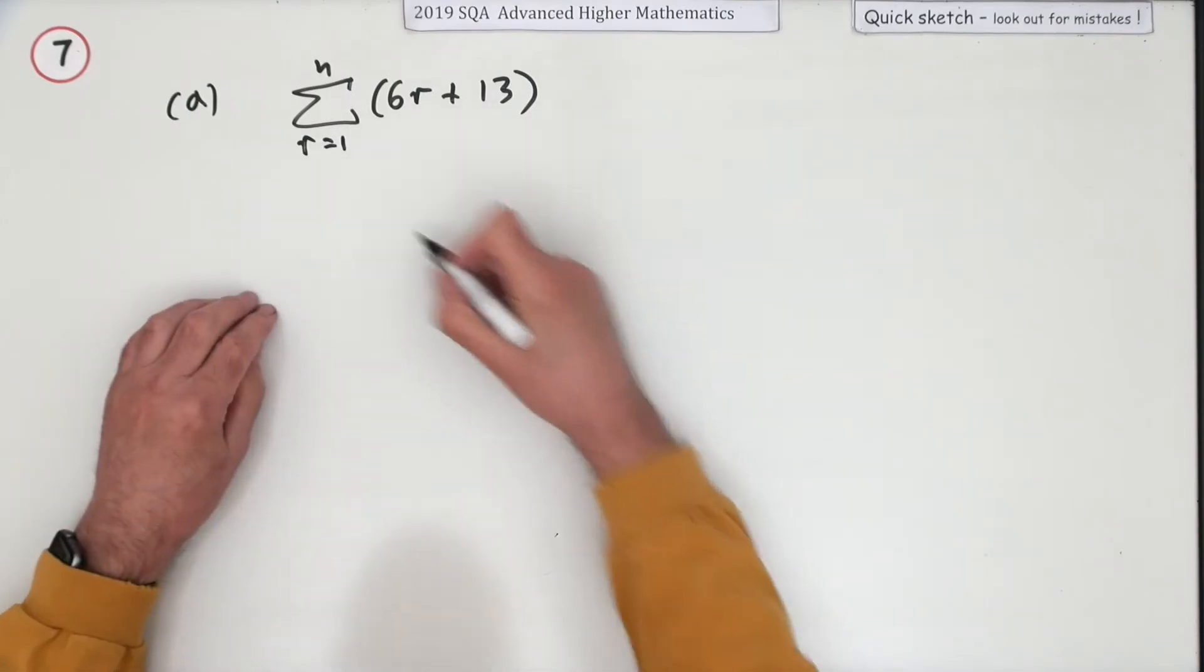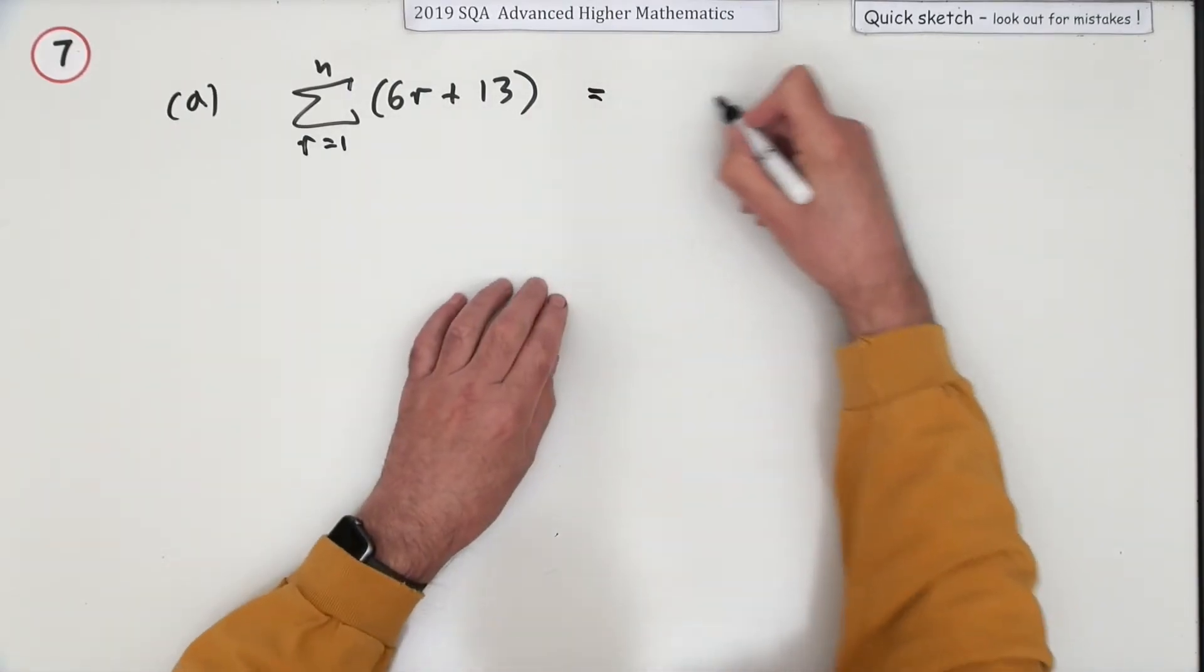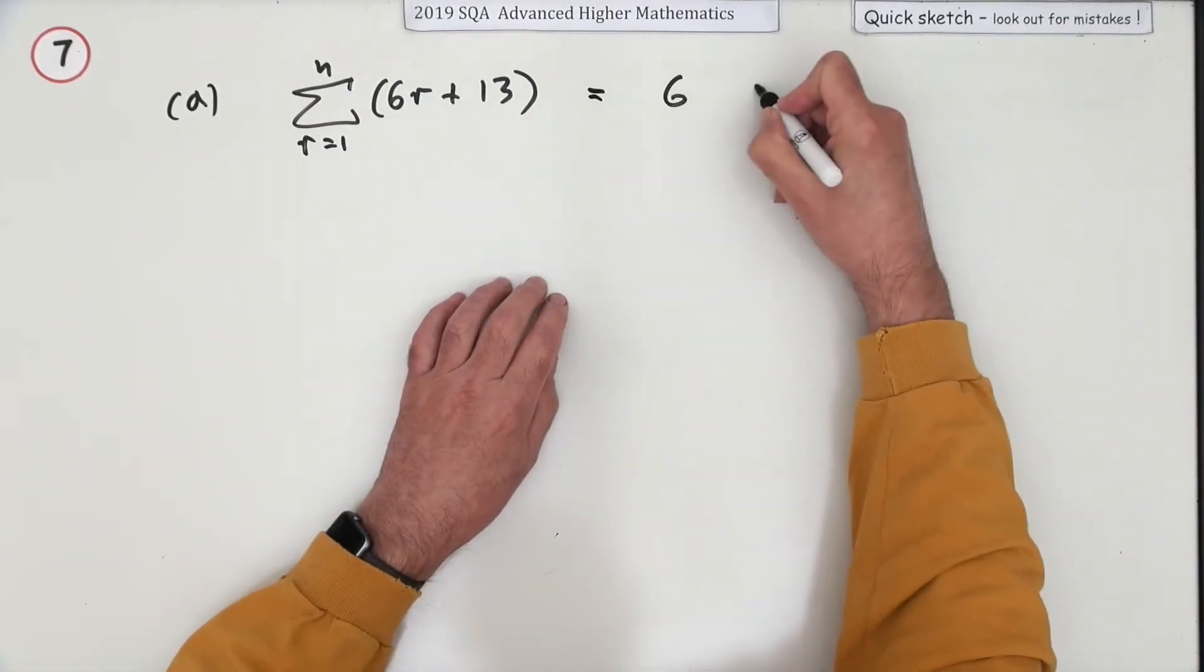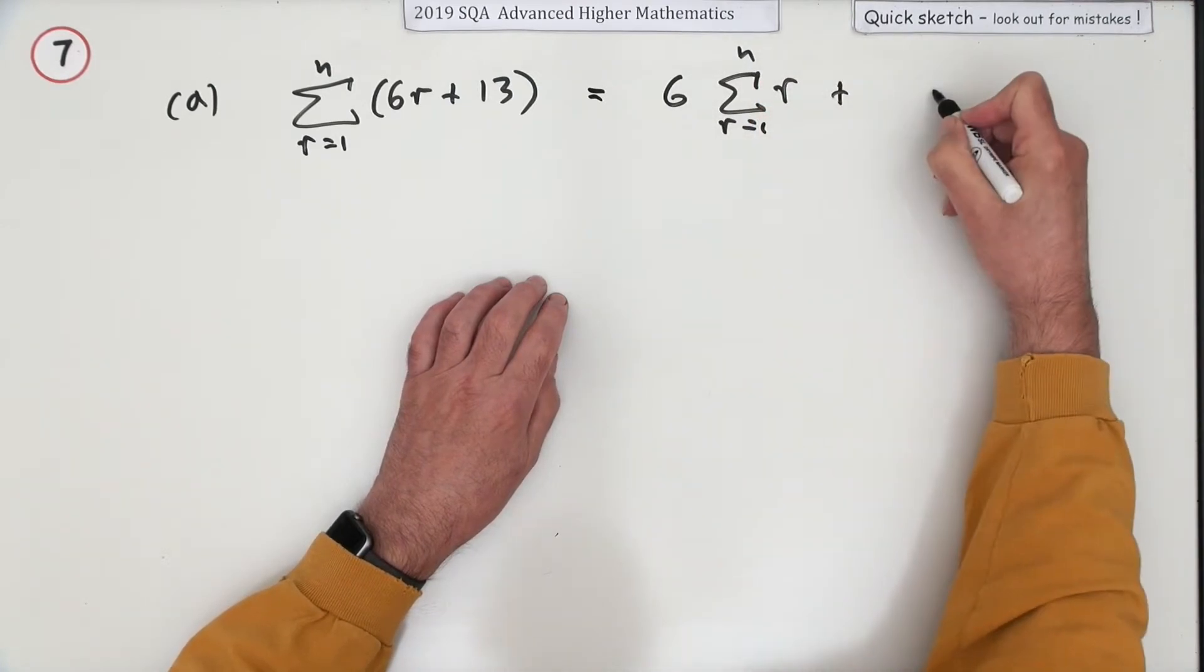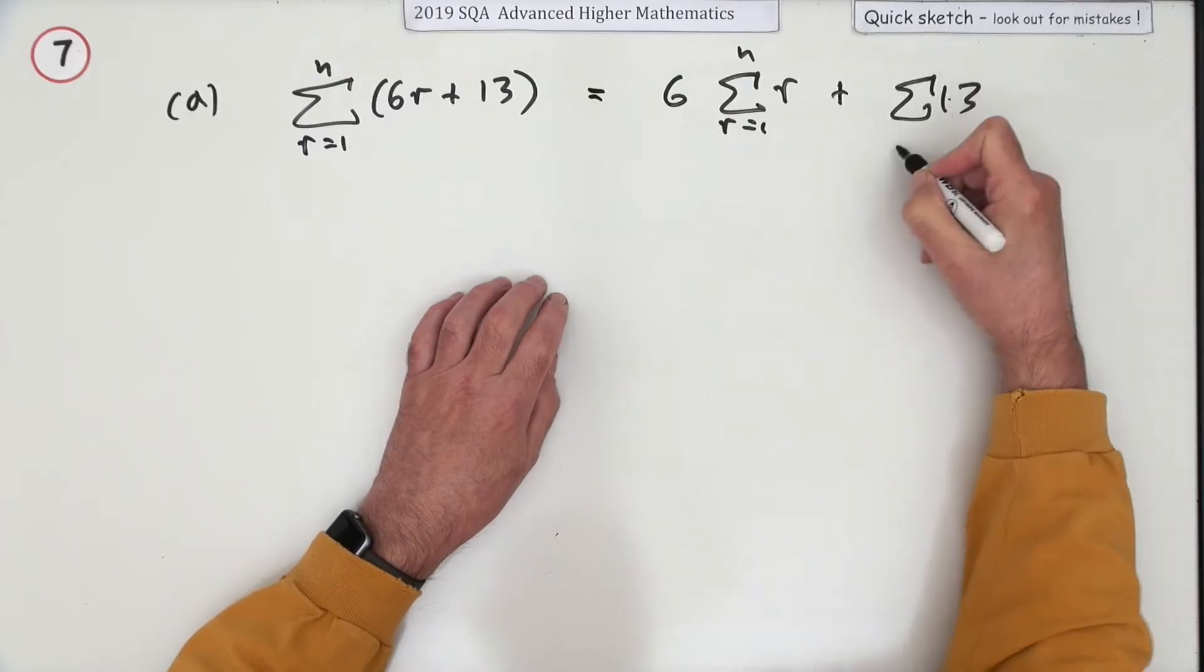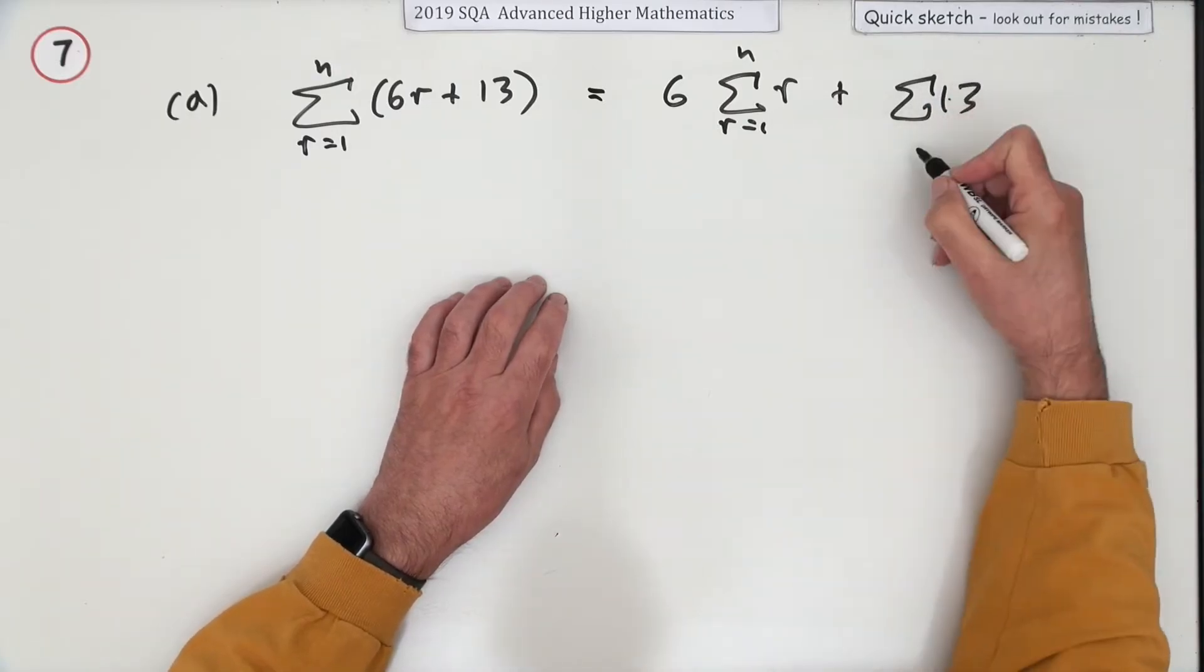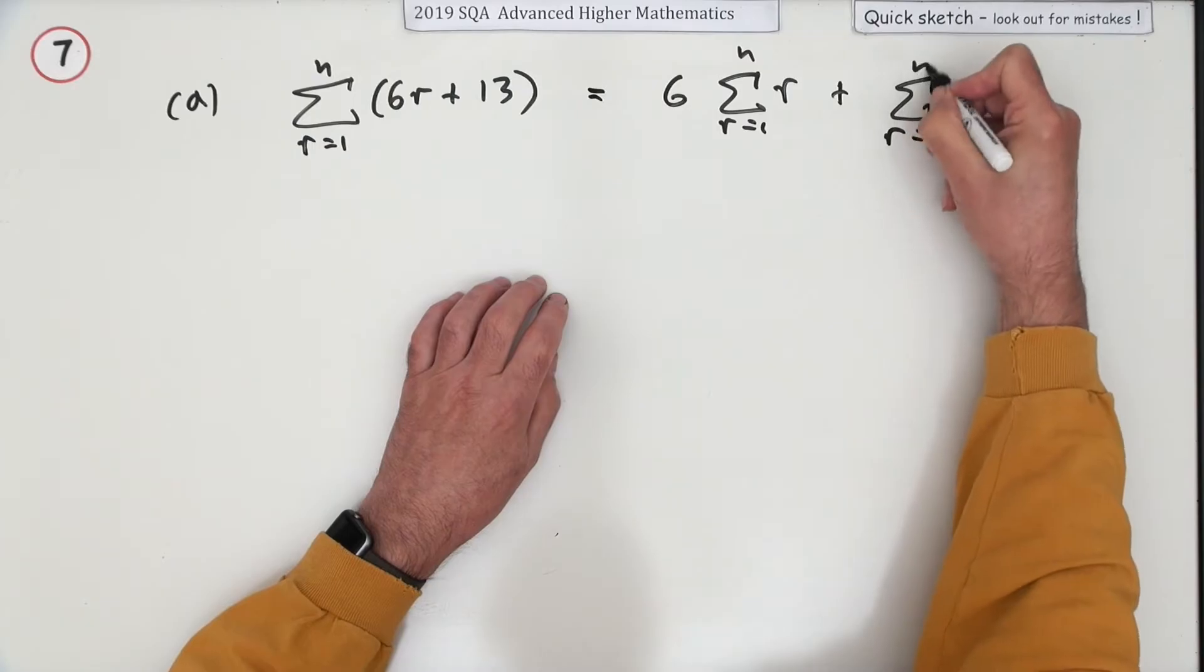Well split it apart so you've got six lots of the sum from r equals one to n of r, plus adding up 13. So you could put 13 one but just leave 13 from one to n.